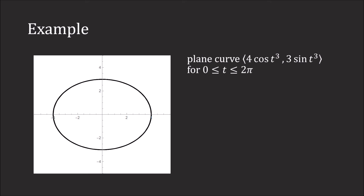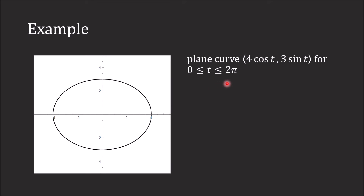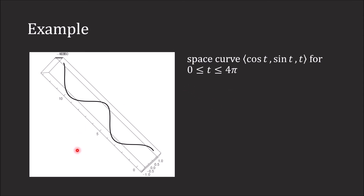This is the plane curve <4cos(t), 3sin(t)> where t ranges from 0 to 2π. Notice between this curve and this curve, one is bolder. From 0 to 2π this is one trace, but if it is now t cubed, this is more than one trace — it traces the curve multiple times, which is why it appears bolder. And finally, this is the space curve <cos(t), sin(t), t> where t ranges from 0 to 4π.